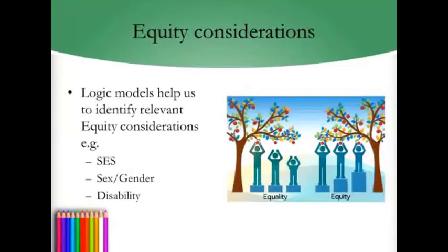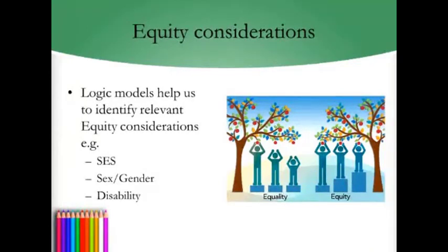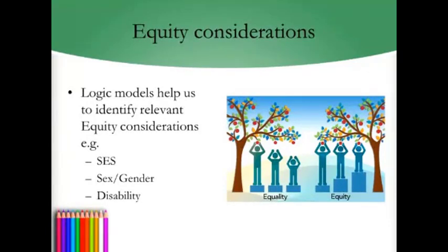Here are the equity considerations. I love this little diagram. Equality means everybody has an equal leg up, but the shorter child needs a bigger leg up to reach the fruit — so equity is when each person is treated according to their needs. Logic models help us identify these considerations — whether SES is important, whether sex and gender are important, and other factors like disability, which can lead to inequities in treatment, care, and life chances.